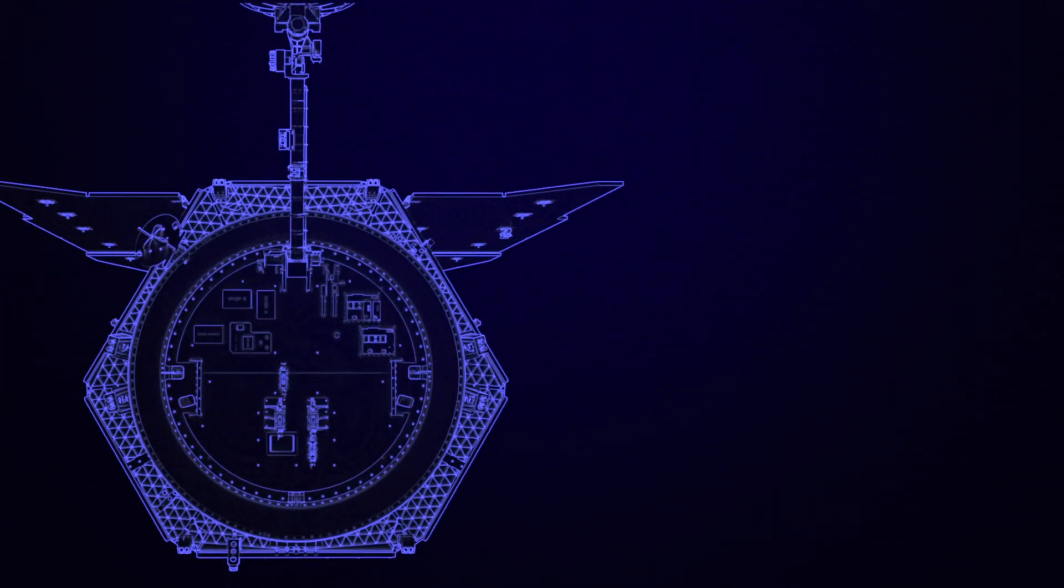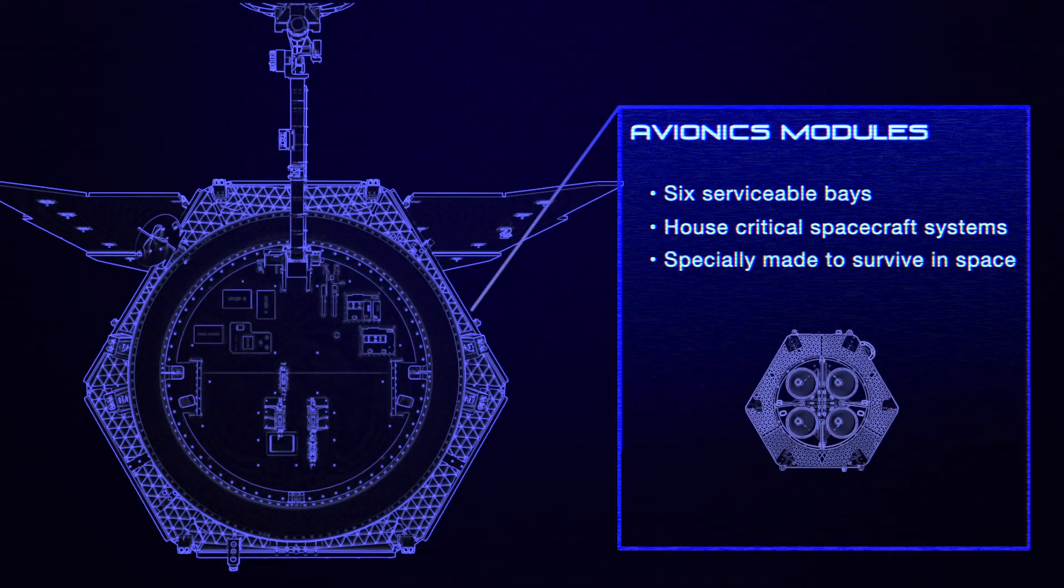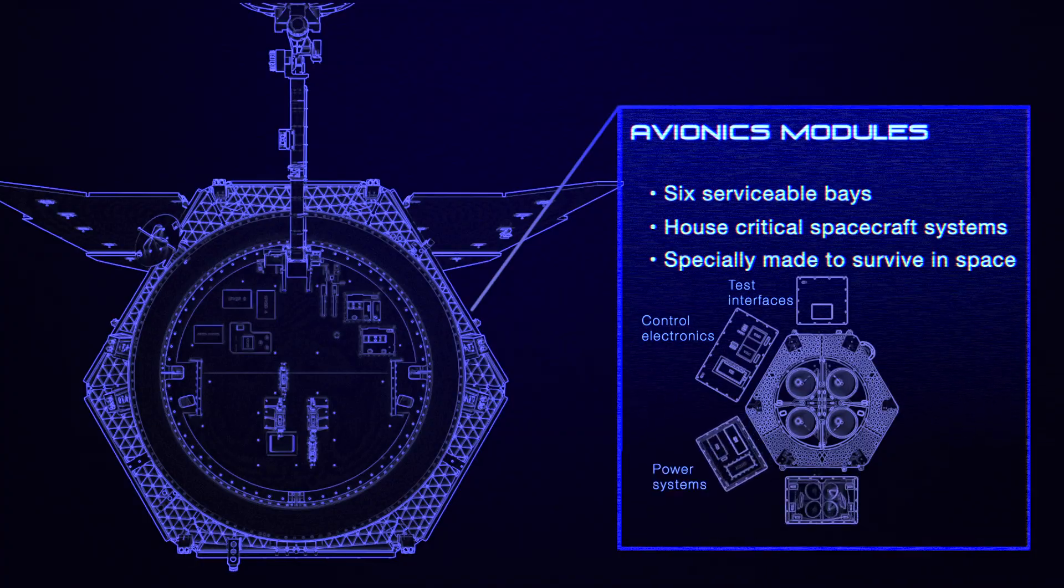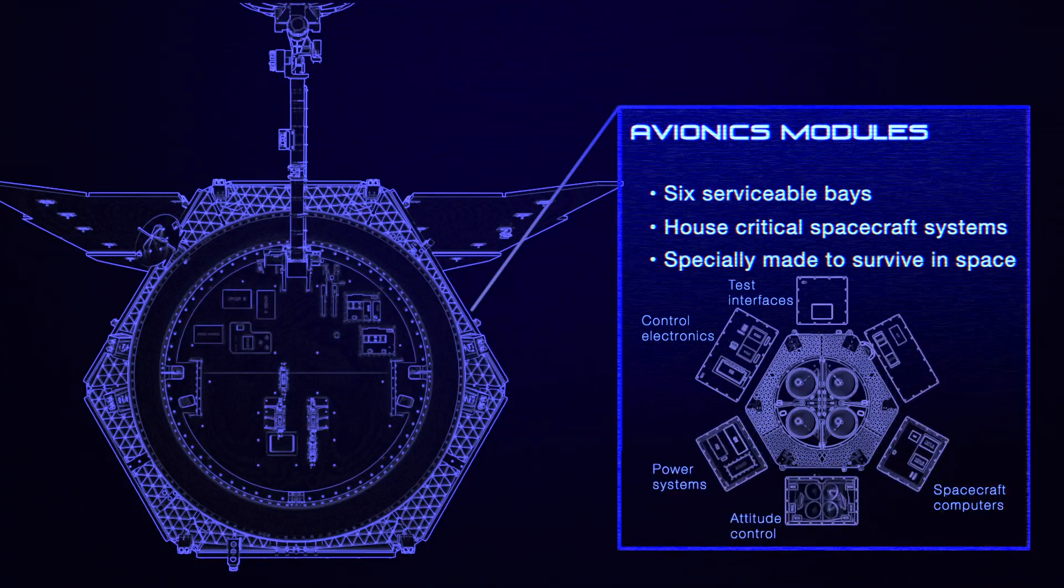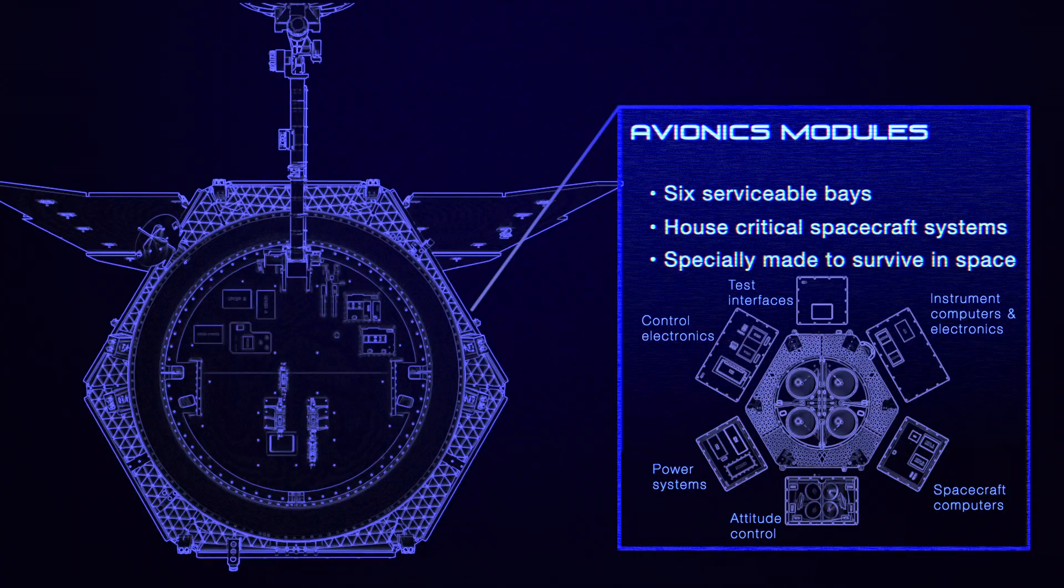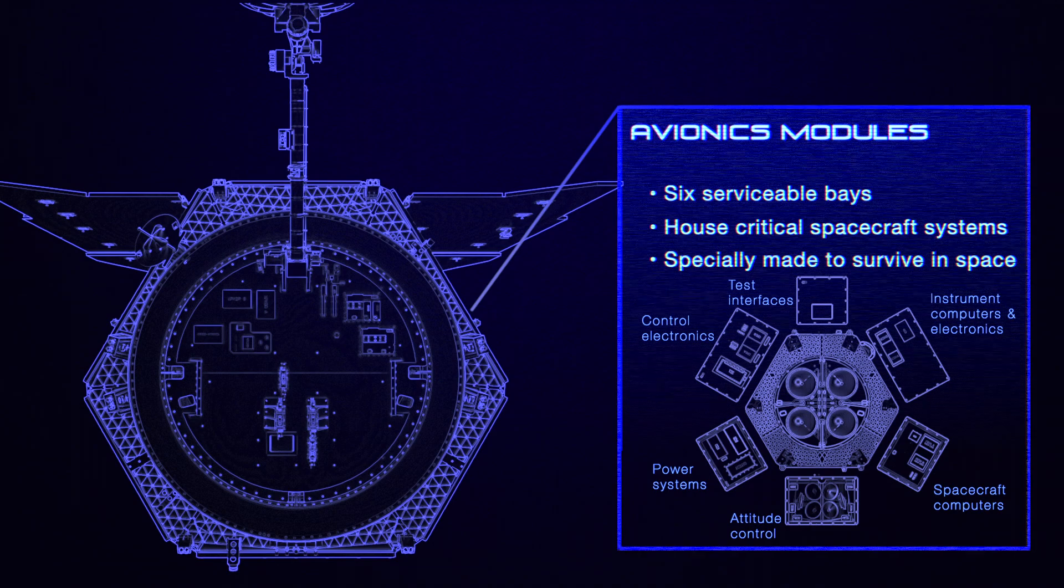WFIRST's critical systems, such as power and data handling, are located in six modules at the spacecraft's rear. These include six rotating reaction wheels that control where the spacecraft points, nearly one ton of propellant for larger movements, and a 10-terabyte data recorder.